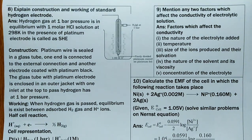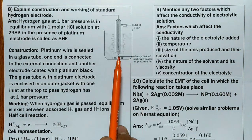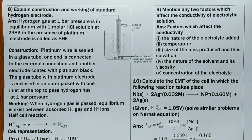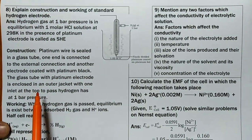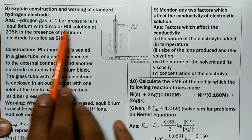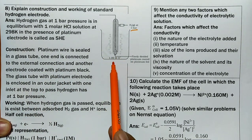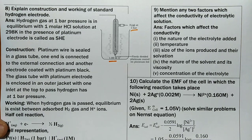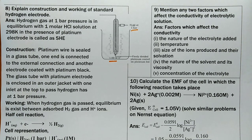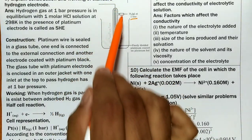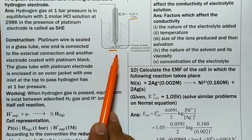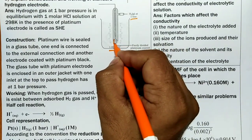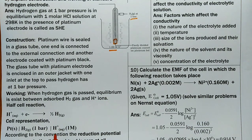What is a standard hydrogen electrode (SHE)? Refer to your textbook for this — it is frequently asked. Hydrogen gas at one bar pressure is in equilibrium with one molar HCl solution in the presence of a platinum electrode; this is called the standard hydrogen electrode. Construction: a platinum wire is sealed in a glass tube. One end is connected to the external circuit; the other end has an electrode coated with platinum black. This glass tube with the platinum electrode is enclosed in an outer jacket.